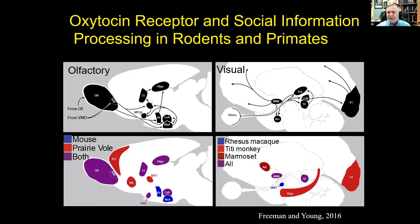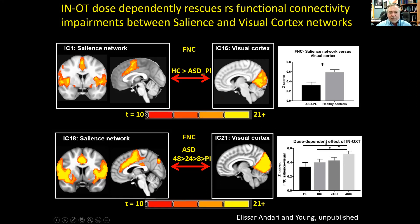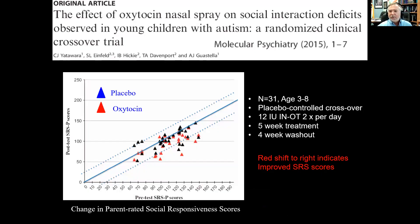We've been doing some intranasal oxytocin studies in humans with autistic subjects. One interesting finding is that in autistic subjects there's a decrease in connectivity between the salience network — which includes the anterior cingulate cortex and insular cortex — and the visual cortex. But if you give people with autism oxytocin, you reestablish that connection, giving a circuit-based mechanism. This is a typical study — the shift in red compared to placebo in black on social responsiveness scale scores shows a little shift, but it's not really robust. It's not having a huge effect, primarily because you're not getting very much oxytocin into the brain intranasally.